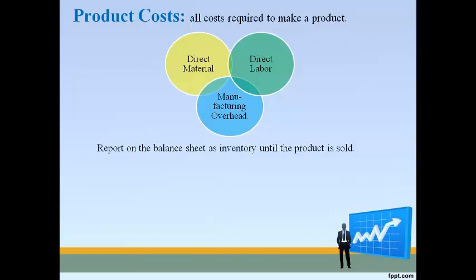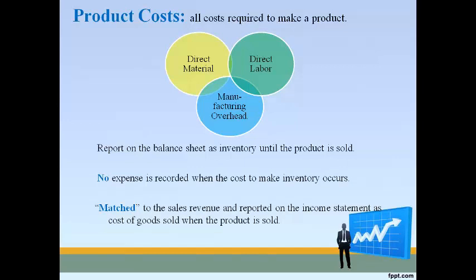Product costs are all costs required to manufacture products. There are three types: direct material, direct labor, and manufacturing overhead. These three costs become the asset inventory. No expense is recorded when the inventory is made. All costs to make inventory are reported as cost of goods sold on the income statement when the inventory is sold to customers, which reports the expense in the same period as the revenue.